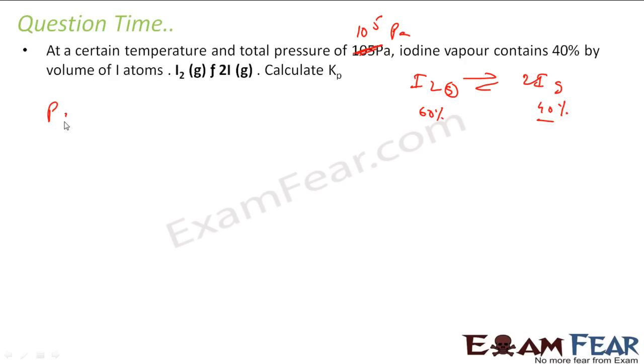Partial pressure of iodine will be what? 60% of this, 60% of 10^5. So all this you get 60 by 100 into 10 to the power 5, that is 6 into 10 to the power 4. That's the partial pressure of iodine.